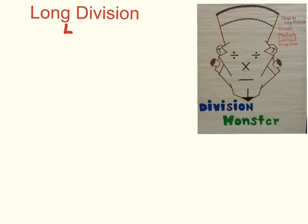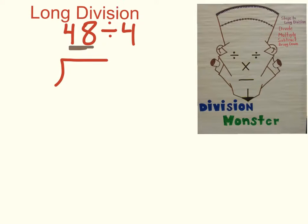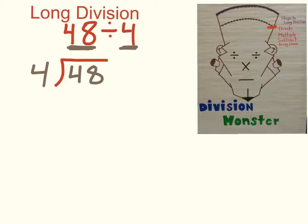Let's say you have a question like this: 48 divided by 4. In long division we use a little box shape. We put our dividend in the box and our divisor in front of it. The first step is to divide. We take our first number, 4, and divide 4 into 4. How many times can 4 go into 4 without going over? Counting by 4s: 4, 8, 12 — so 4 divided by 4 is 1. I put a 1 at the top.